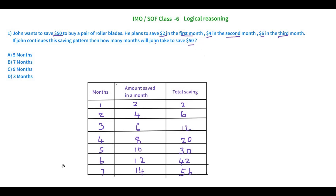At the end of the seventh month he has $56, which is above $50, so John is able to buy his pair of rollerblades. The right answer is 7 months — option B is correct. Whenever we have word problems, break them into small parts so that you will be able to understand. If you found this video interesting, click on the subscribe button and the bell icon.